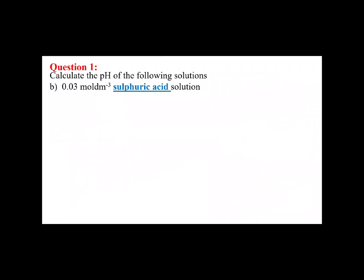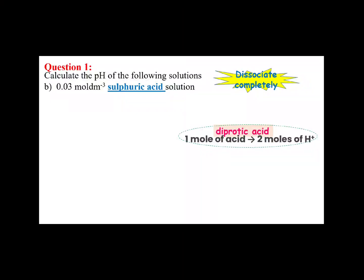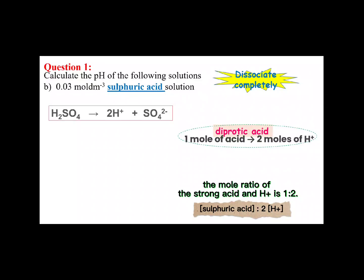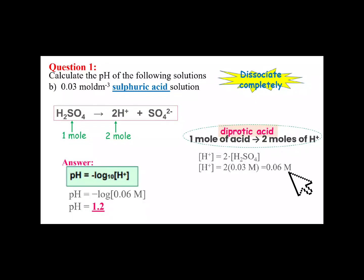Next, Question 1b. We need to find the pH of 0.03 mol/L solution of sulfuric acid. Sulfuric acid is a strong diprotic acid, which is ionized completely in solution. For each mole of sulfuric acid, there are 2 moles of hydrogen ions. By referring to the equation for the dissociation of sulfuric acid, the mole ratio of sulfuric acid to hydrogen ions is 1 to 2. So, the concentration of hydrogen ions is double the concentration of the sulfuric acid. After identifying the concentration of hydrogen ions, we plug it into the pH formula to determine the pH value of the sulfuric acid.